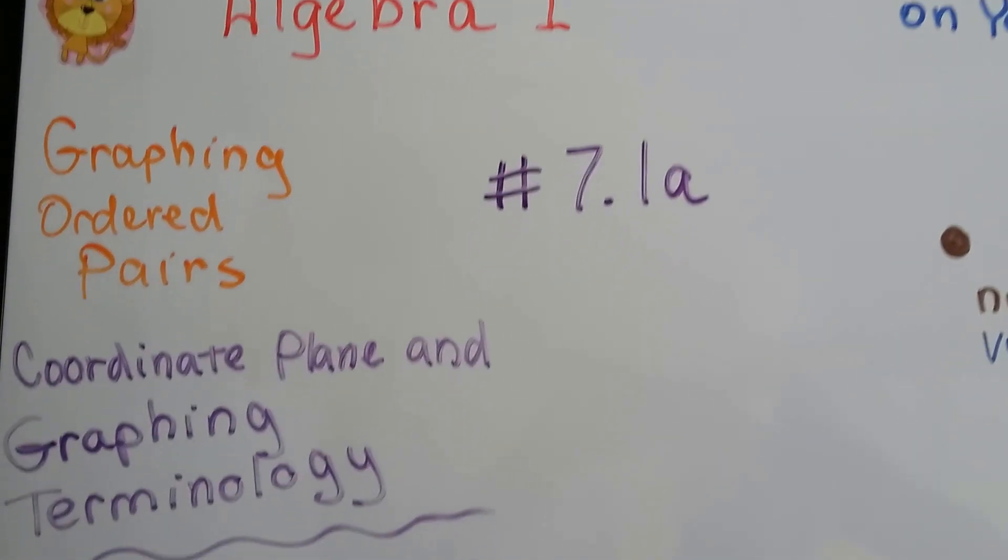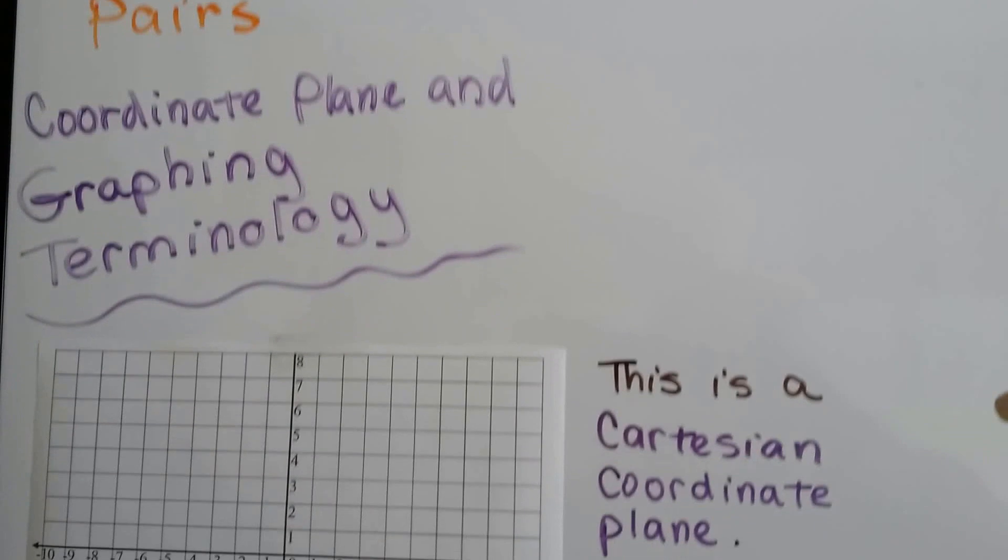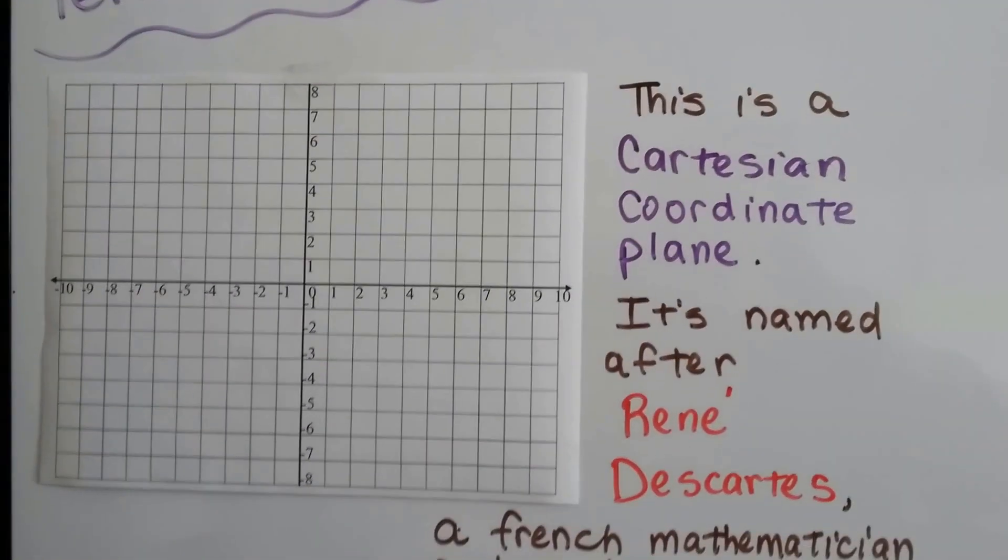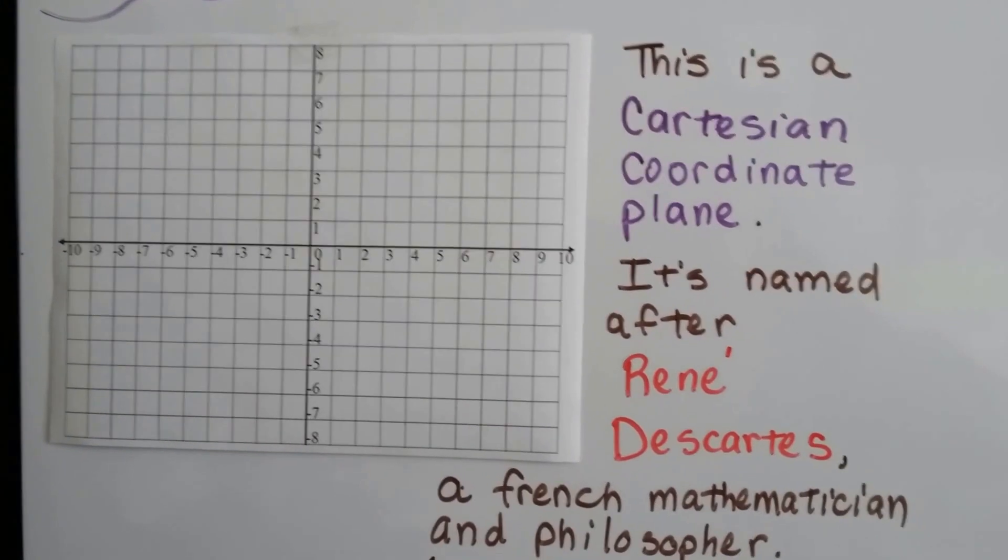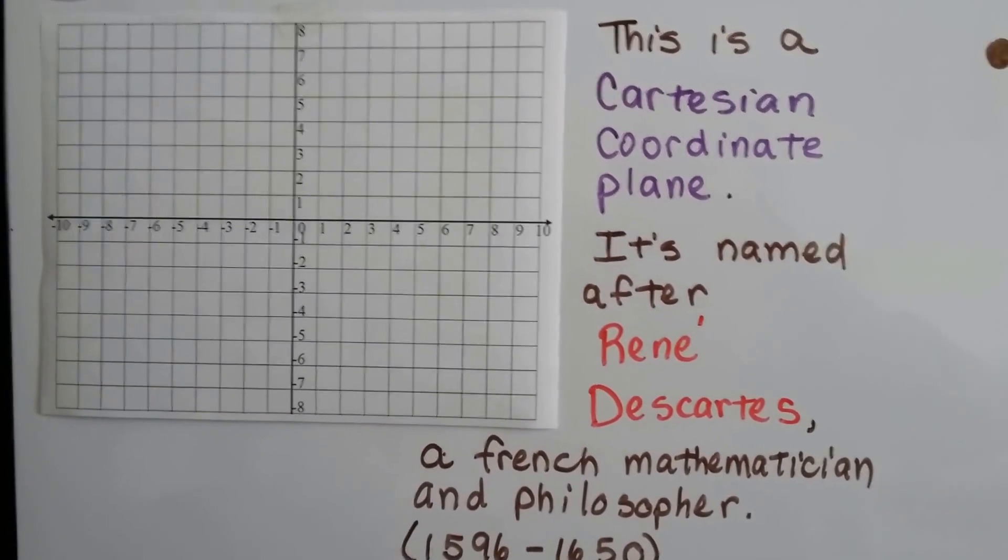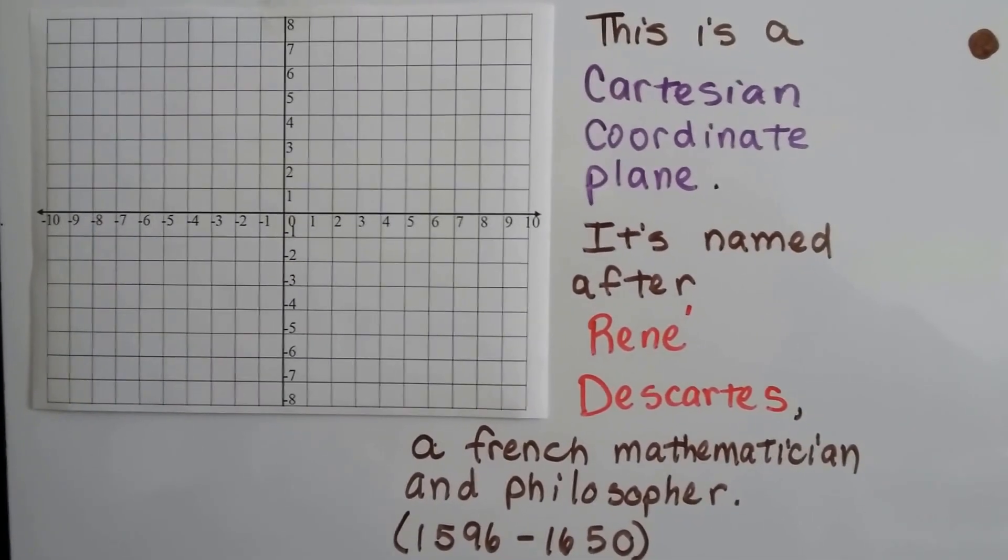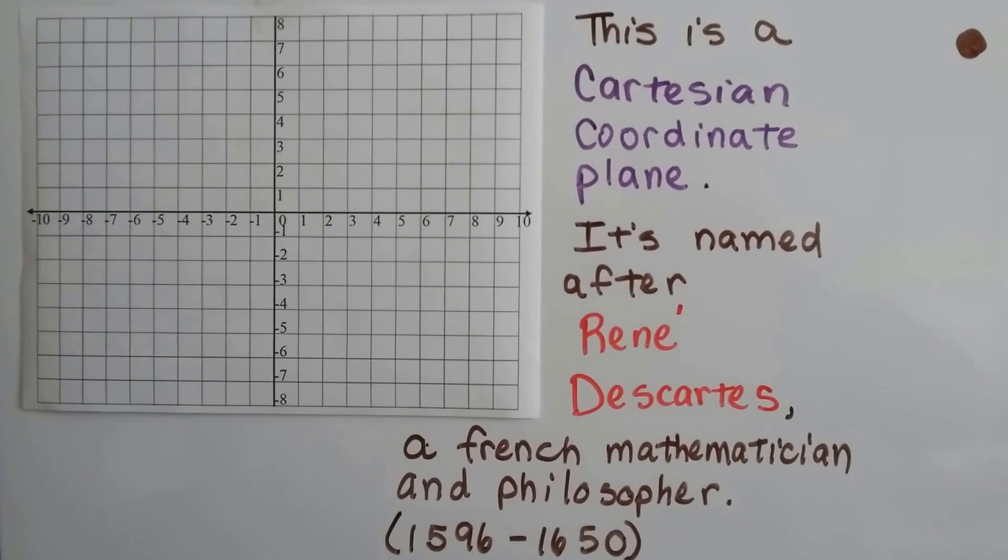Algebra 1, 7.1a is the coordinate plane and graphing terminology. This is a Cartesian coordinate plane, named after René Descartes. He was a French mathematician and philosopher who lived from 1596 to 1650.